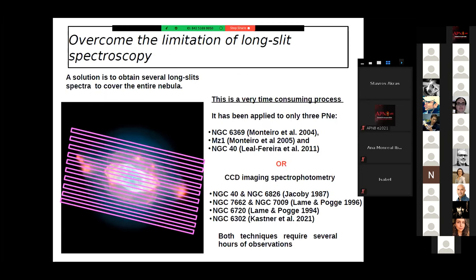One way to do that, one way to map the entire nebula, is to obtain spectra from different parallel slit positions, like in this example. But this is a very time-consuming process and it has been applied only to three planetary nebulae, as I know. Both techniques are very time-consuming and you need several hours of observations.